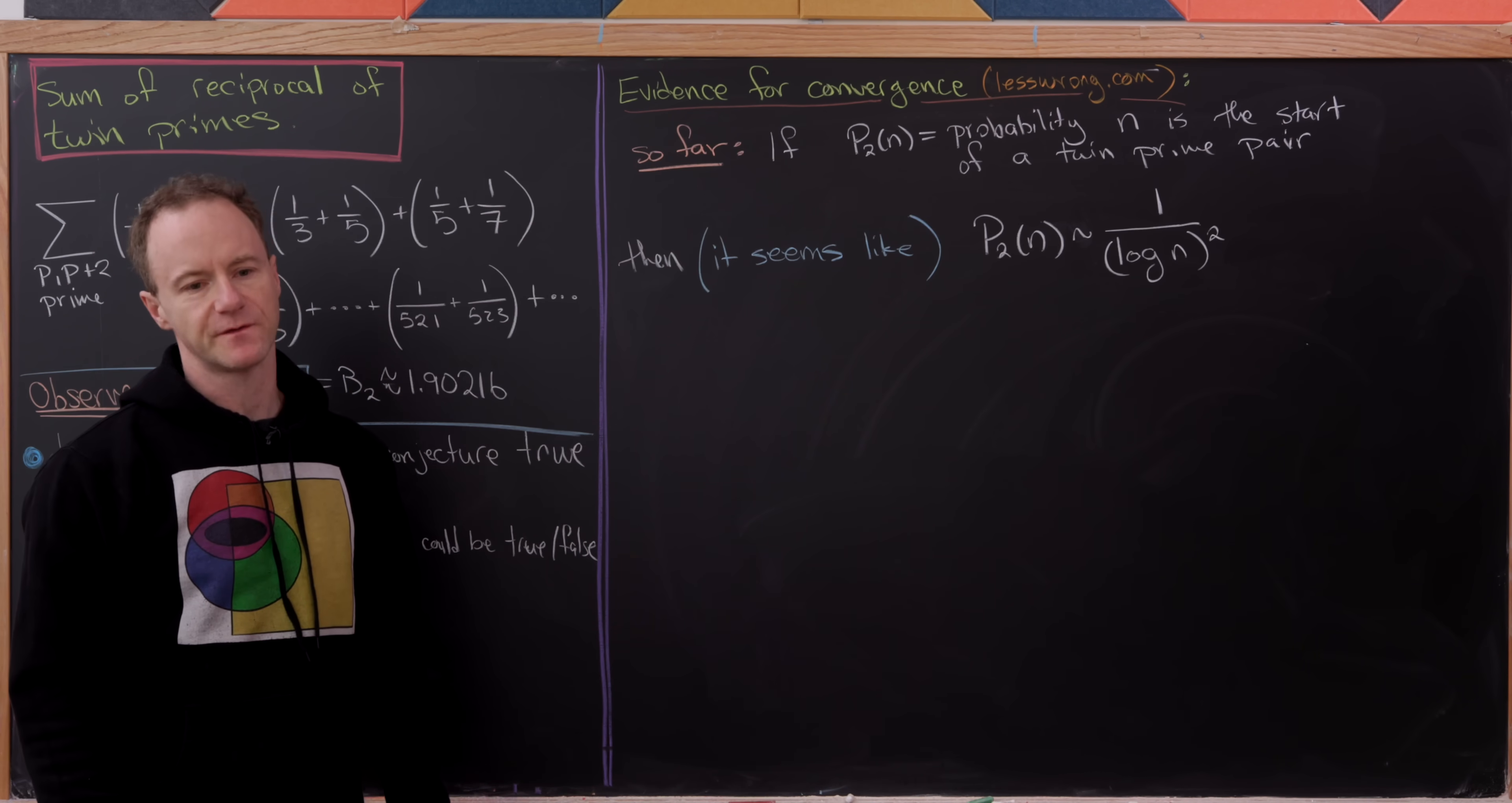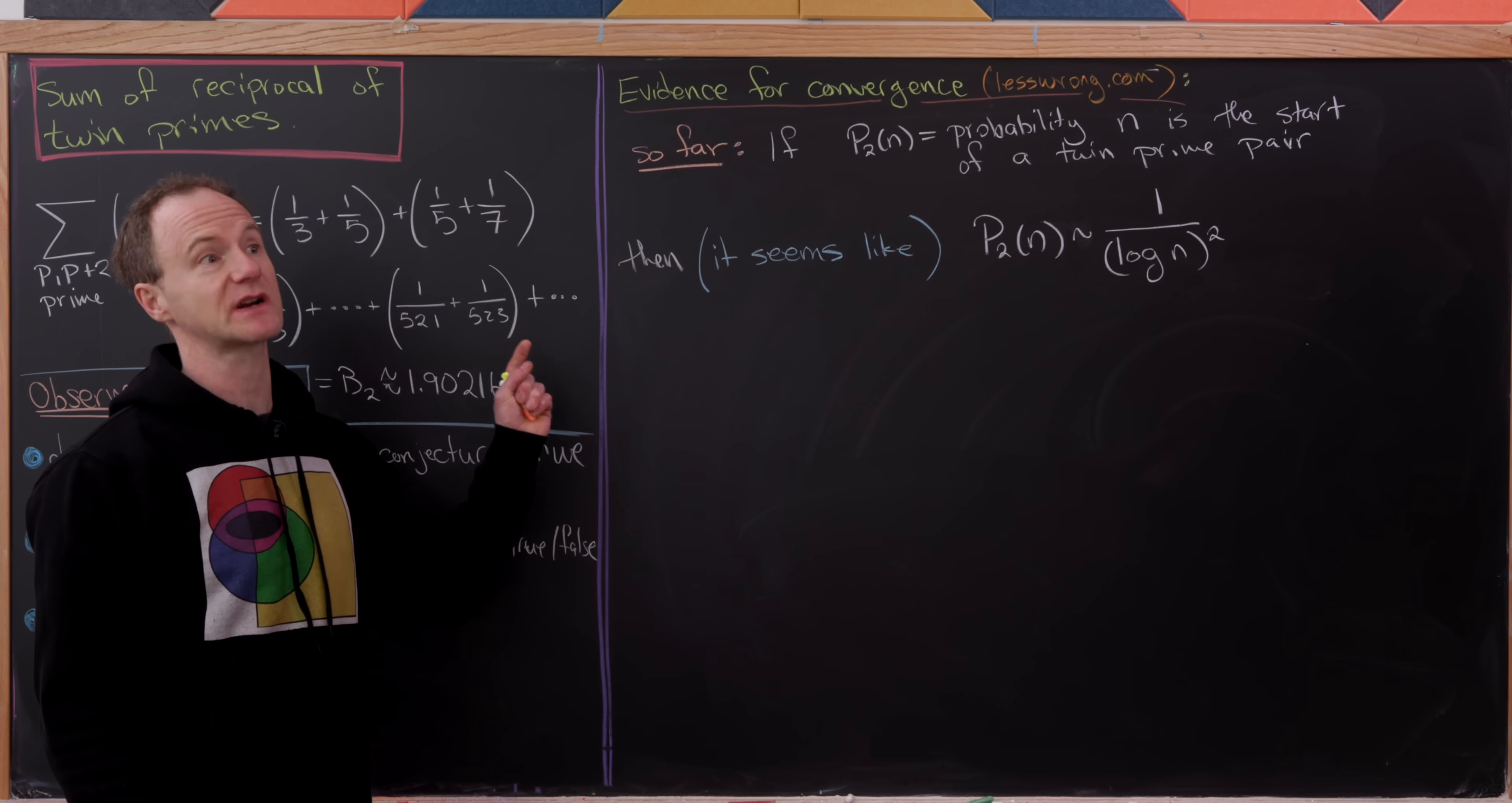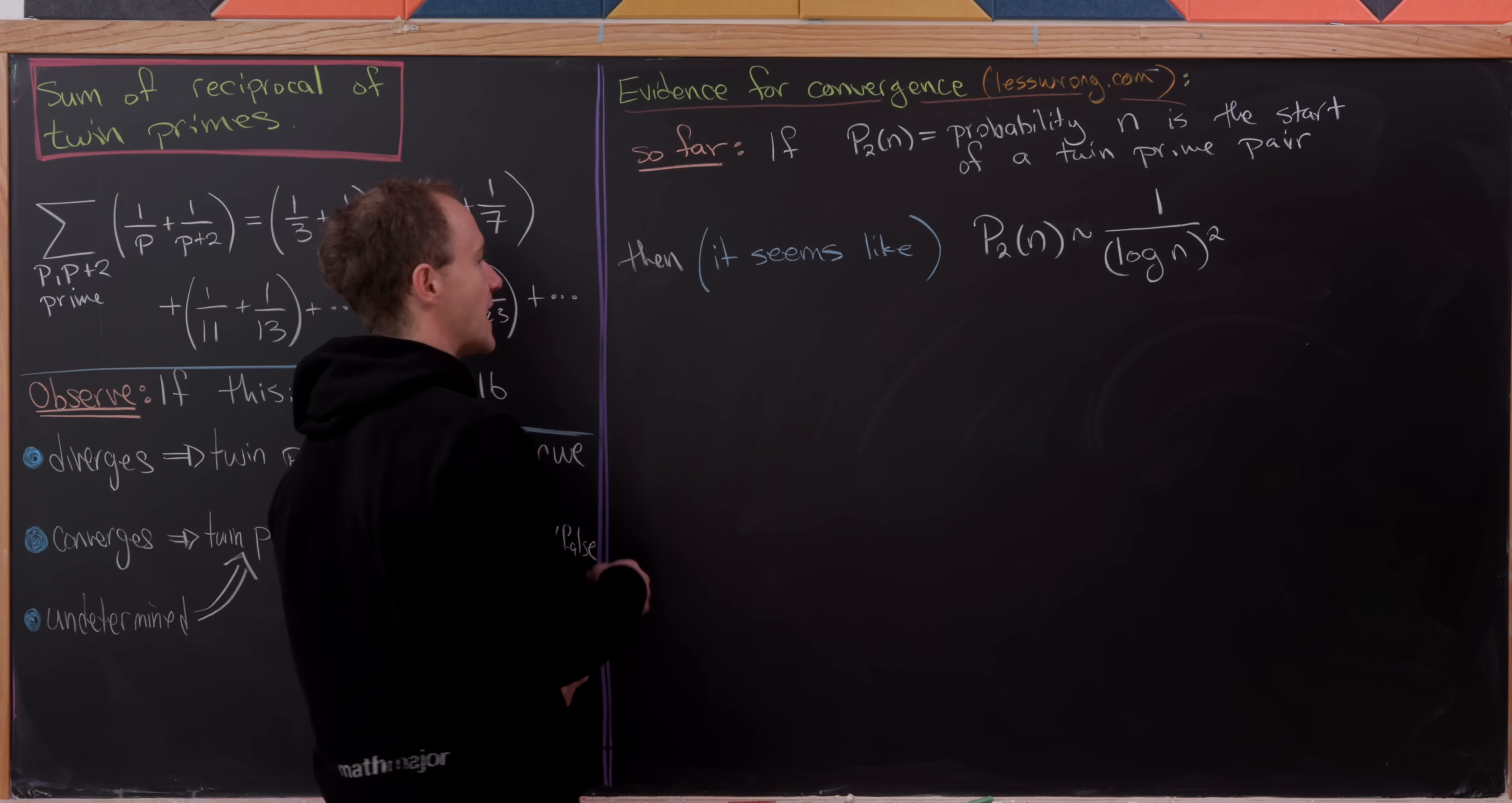So what have we done so far? Well, if we set P sub 2 of n equal to the probability that n is the first term from a twin prime pair, then it seems like, so we didn't strictly prove this, but we had what's called a heuristic argument that P sub 2 of n should grow asymptotically similar to 1 over the log of n squared.